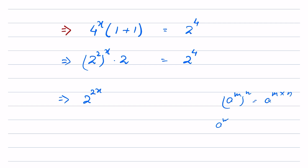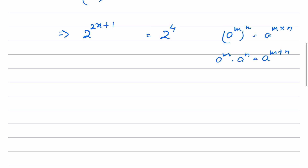Using the identity a^m times a^n equals a^(m+n), this becomes 2 to the power (2x + 1) equals 2 to the power 4. Now there is a rule: if a^m equals a^n, and a is not equal to 0 or 1, then m equals n. Here a is 2.